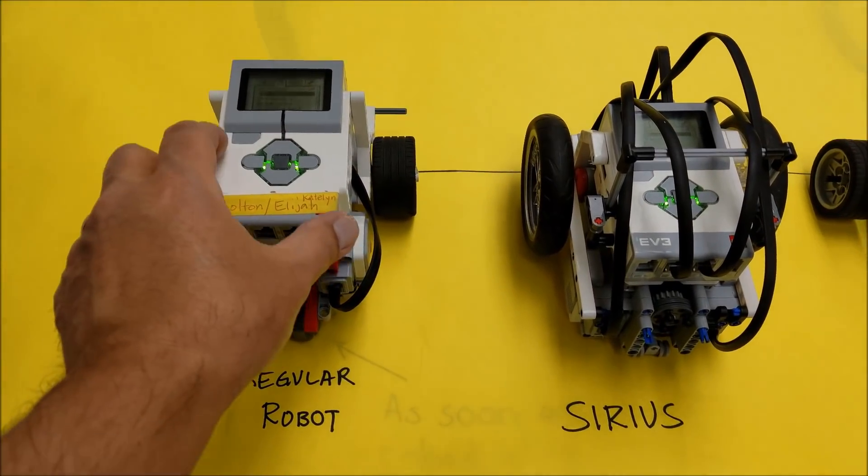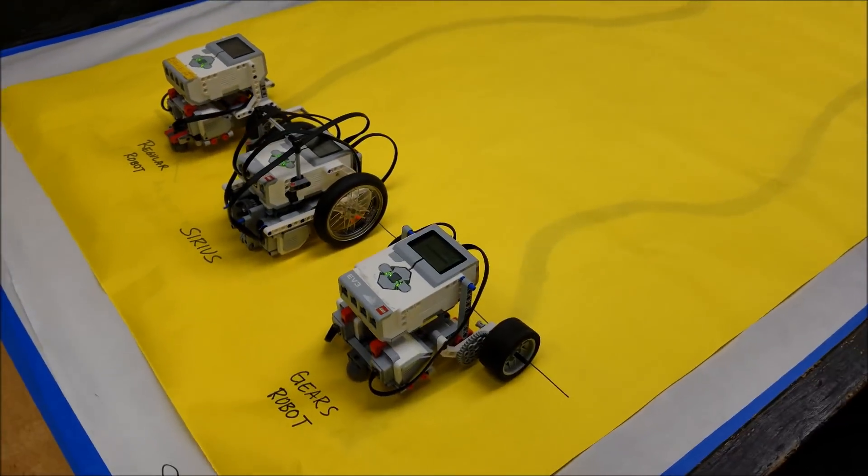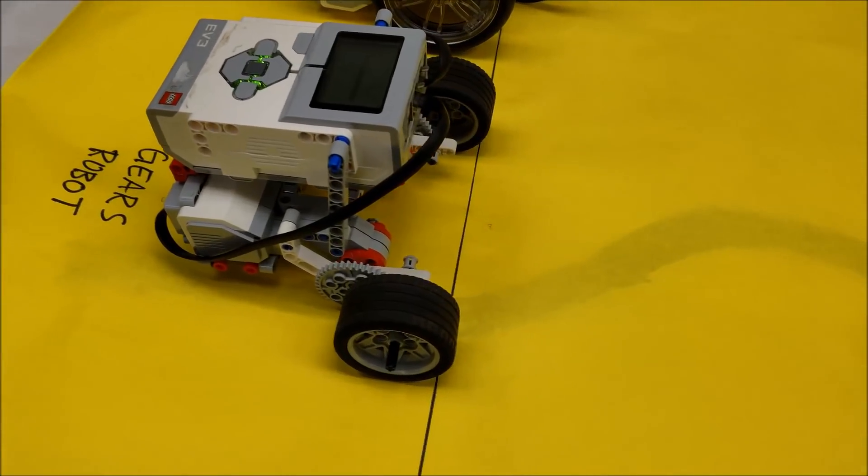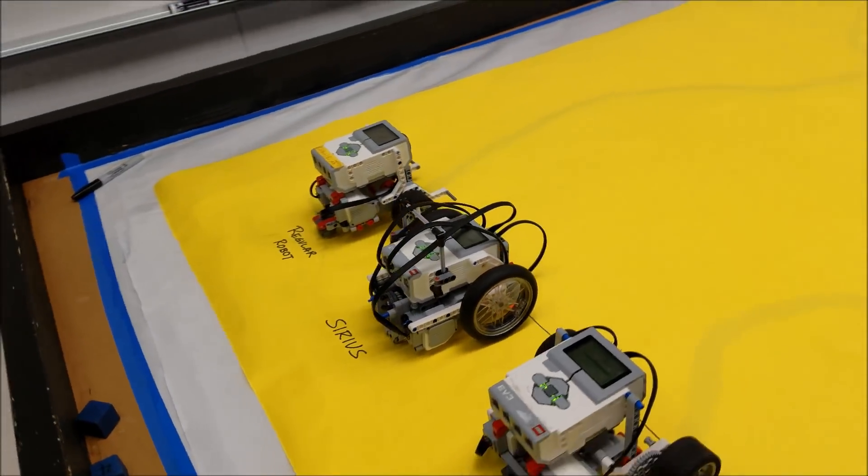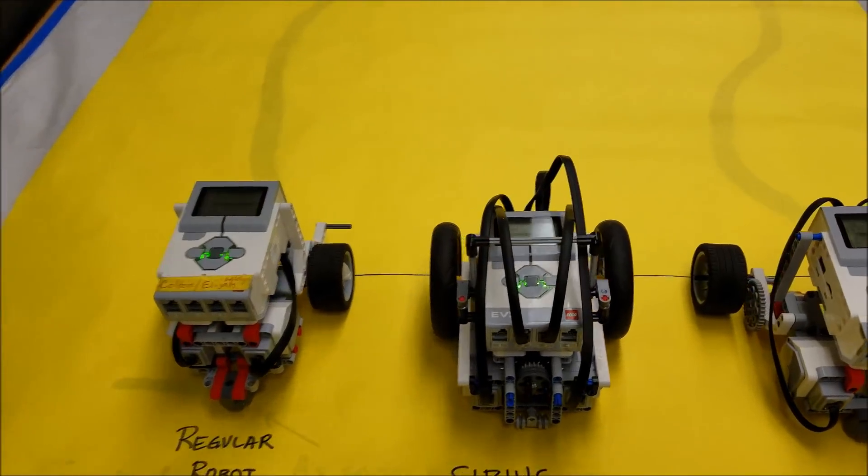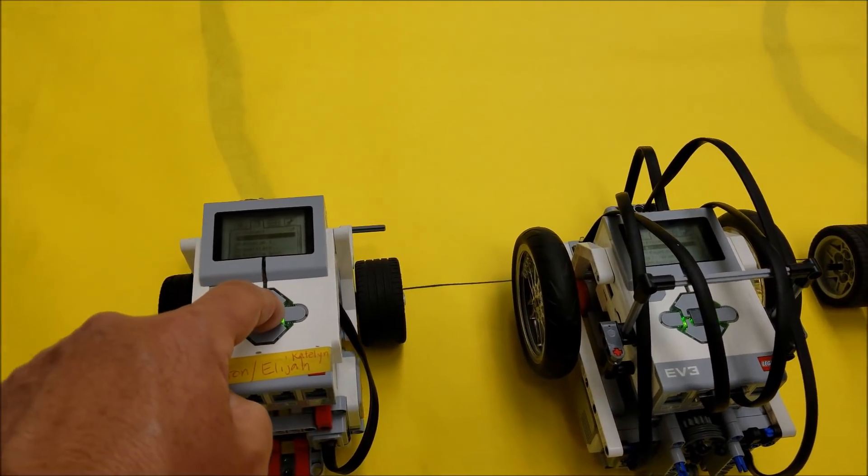So regular robot. Let me just show you that we're all perfectly on the line again. Wheels, wheels. Okay, just want to be fair. All right, so here we go. Regular robot. One second. Let's see how far that goes.